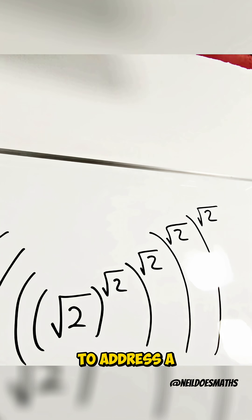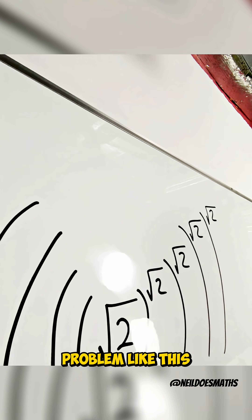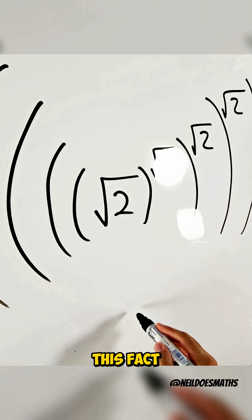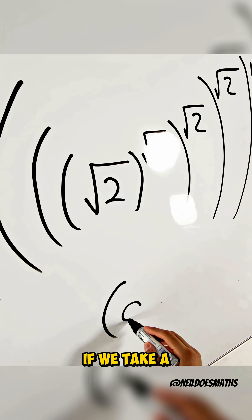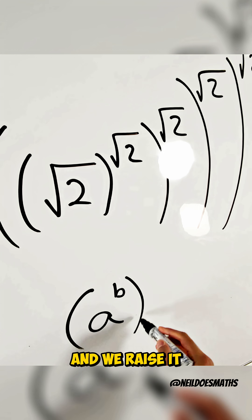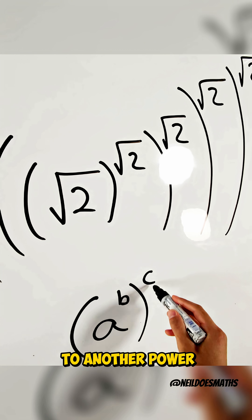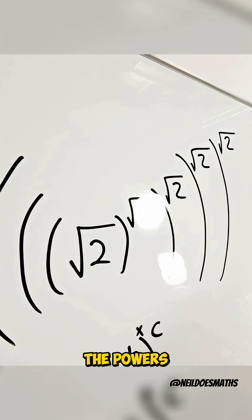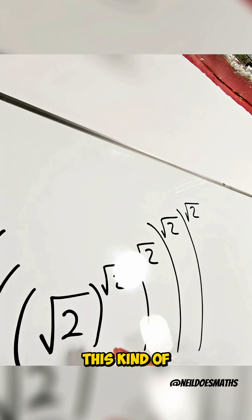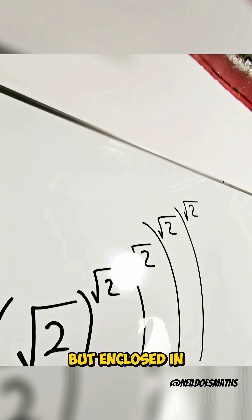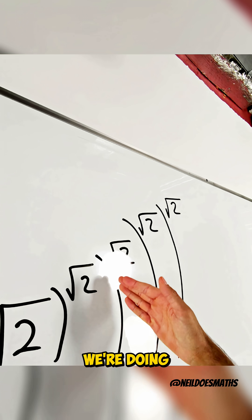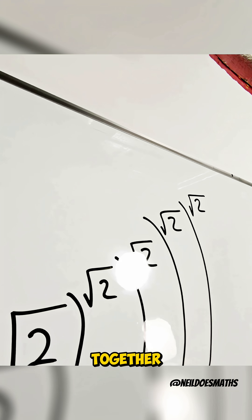Right, to address a problem like this with powers and brackets, we need to use this fact. If we take a number raised to a power and we raise it to another power, we multiply the powers. So here I have this kind of power tower, but enclosed in brackets, which means all we're doing is multiplying these powers together.